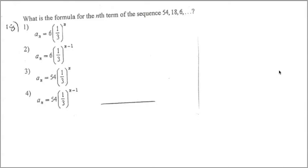Let's look at part two. We are looking at the nth term of this sequence, and that's what we end up getting. Since every time it becomes one-third, we get one-third as a common ratio. To match the first term, when you plug in one, we should end up getting 54. When you plug in one here, we don't get 54. There's only one answer that gets you 54 — once you plug in one, it will be choice 4.